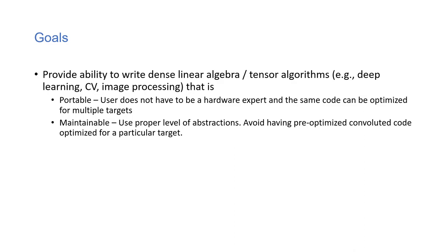The goal is basically a separation of concerns — a software engineering principle where you want your algorithm expert, for example someone working in deep learning, computer vision, or image processing, to not also need to be a hardware expert. Let the compiler do that. If you specify the algorithm at a high-level abstraction, then let deep learning or some other compiler technique find the best schedule to optimize it.